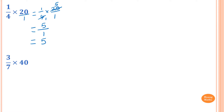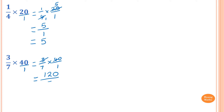So 3 over 7 times 40. 40 is just like 40 over 1, so I just rewrite this and multiply by 40 over 1. I can multiply the numerator with numerator and the denominator with the denominator. So 3 times 40: 3 times 4 is 12, and I just write down the 0. And 7 times 1 is 7. So 120 over 7 — but this is an improper fraction.